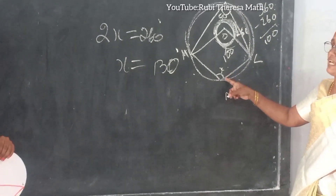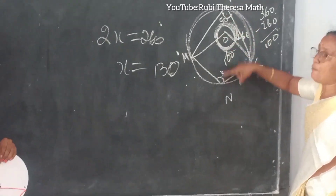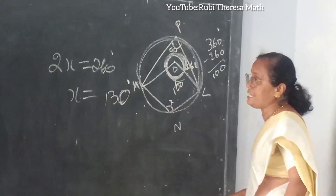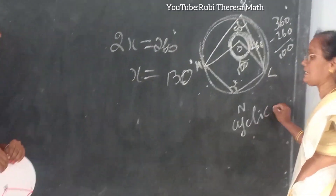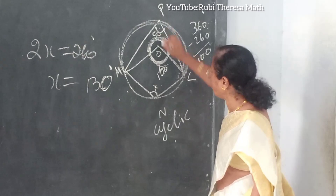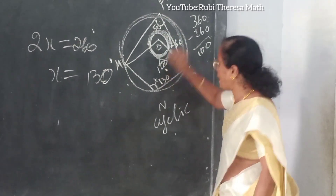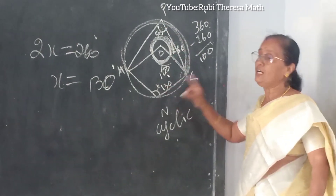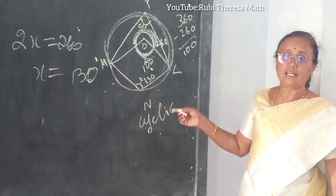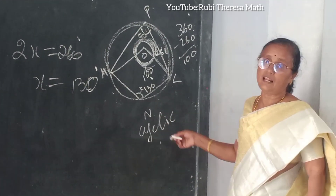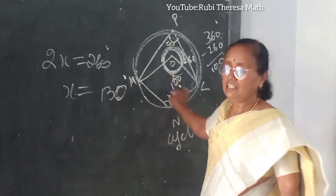But you want to find out X only. In a cyclic quadrilateral, the sum of the opposite angles is equal to 180 degrees. So 130 plus 50 equals 180 degrees. You can do it either way, whichever method you prefer.